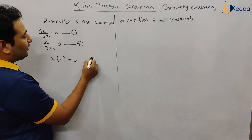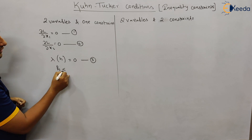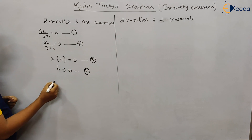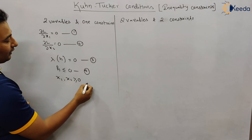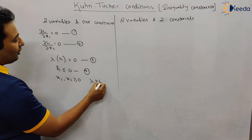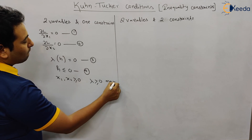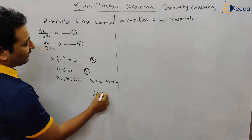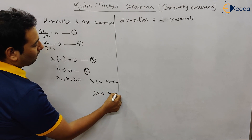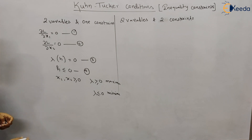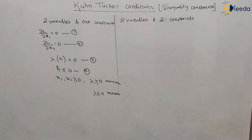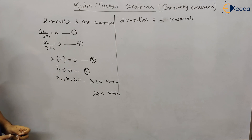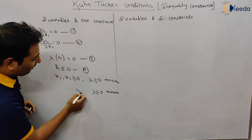Condition three is lambda times the constraint equals zero. Condition four is the constraint less than or equal to zero. Condition five is x1, x2 greater than or equal to zero. Lambda greater than or equal to zero is for maxima, and lambda less than or equal to zero is for minima.